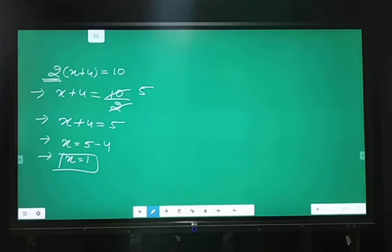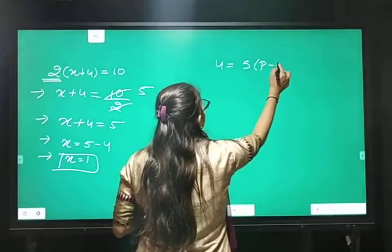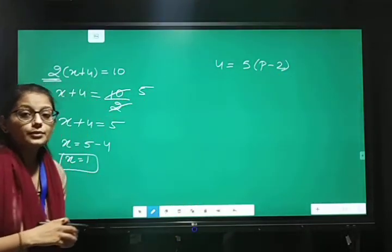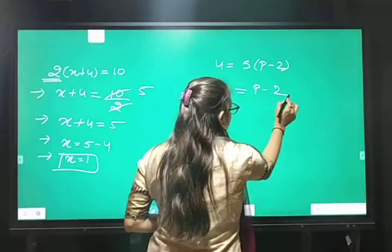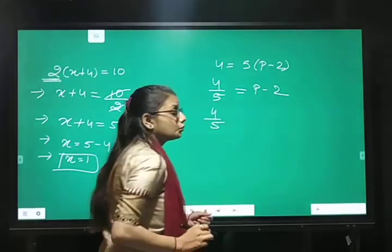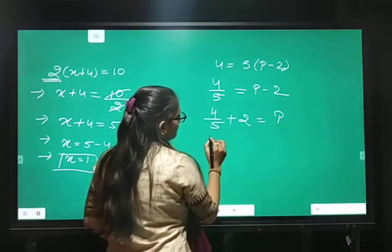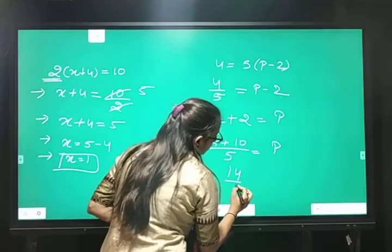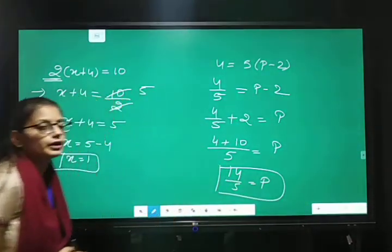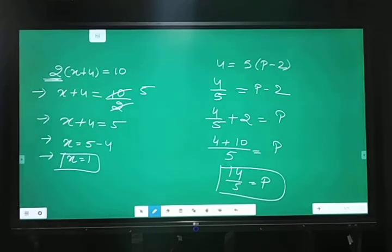One more example is 4 equal 5P minus 2. 4 equal 5P minus 2. Transposing 5 to RHS side. So 4 upon 5 and P minus 2. Again transfer to RHS side plus 2 equal P. 4 plus 10 upon 5. LCM is 5. So 14 upon 5 equal P. It means value of P equal 14 upon 5. Okay students. Thank you so much.